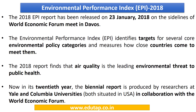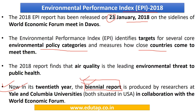Environmental Performance Index, i.e. EPI 2018, was released on 23rd January 2018. It measures how close countries come to meeting the targets for core environmental policy categories. It is a biennial report released every two years, produced by researchers at Yale and Columbia Universities of USA in collaboration with the World Economic Forum.